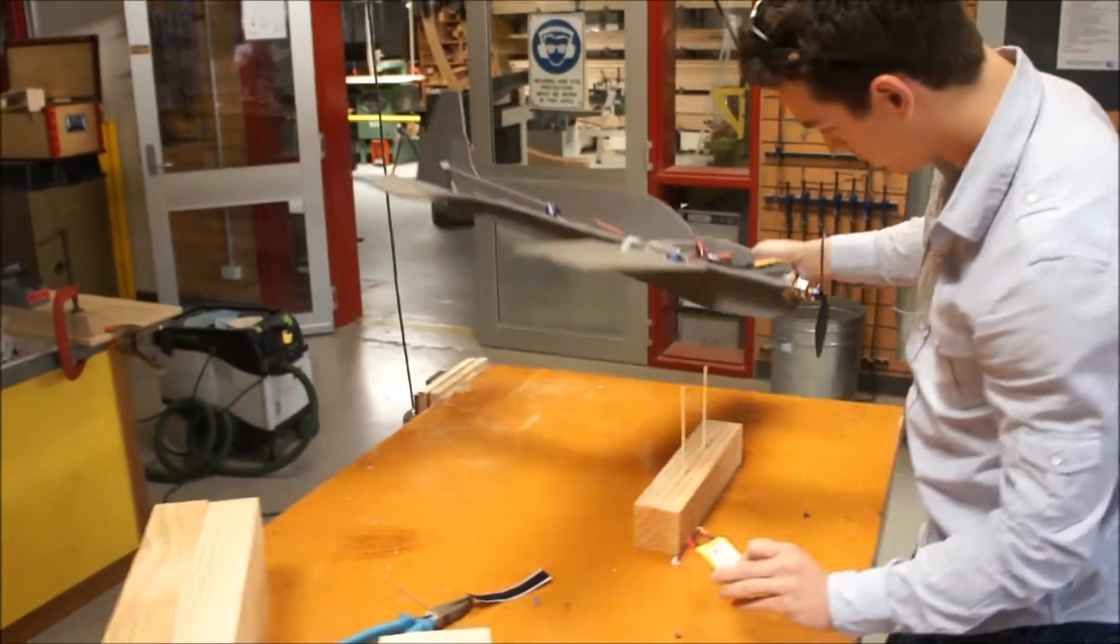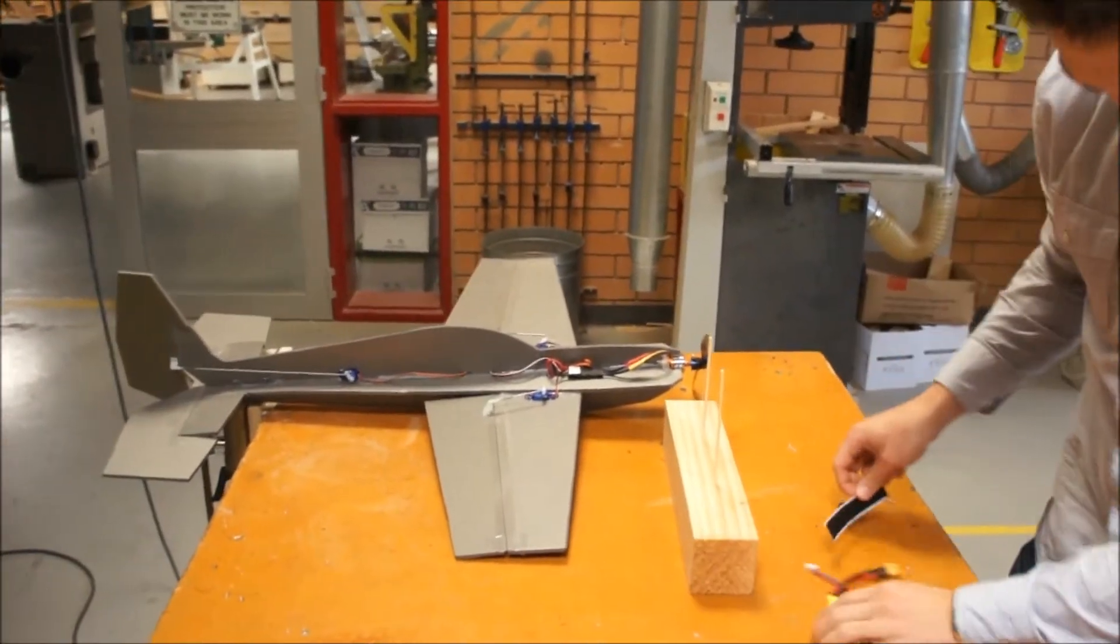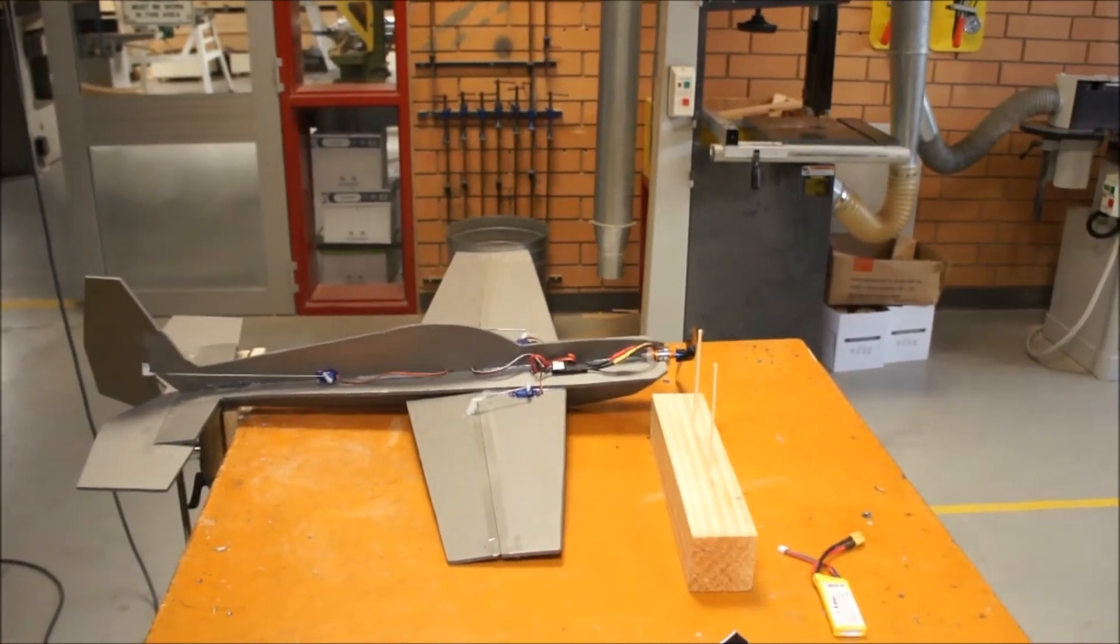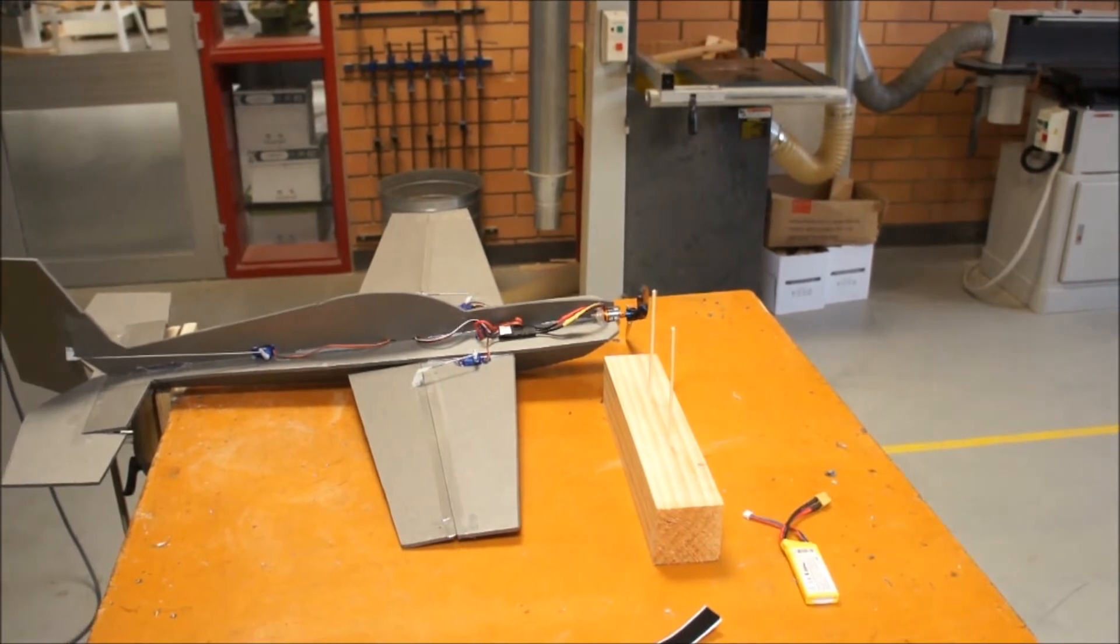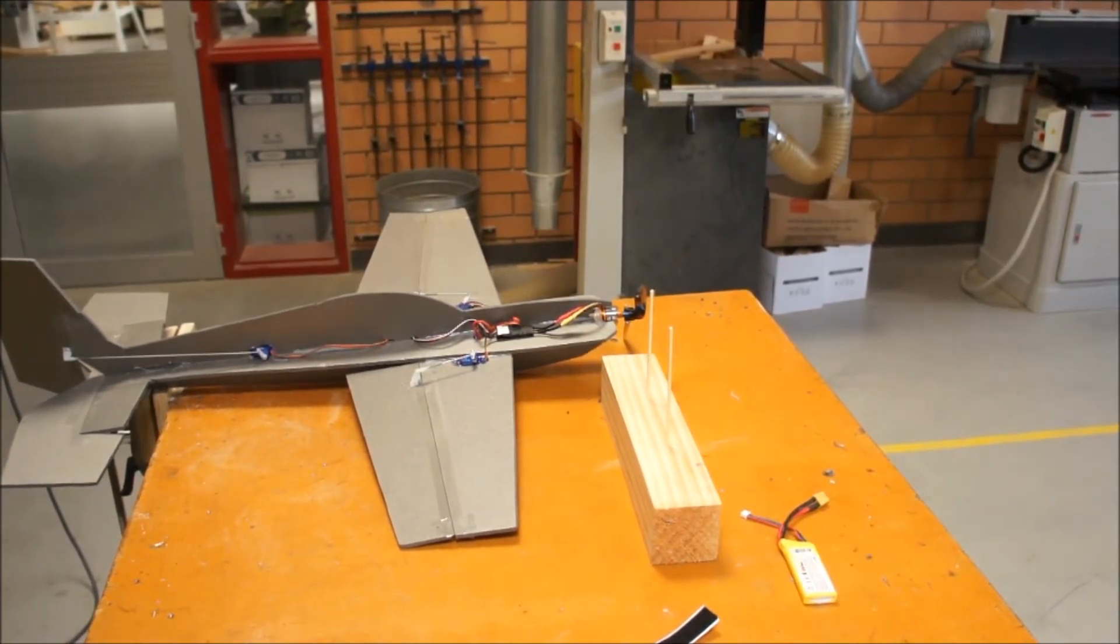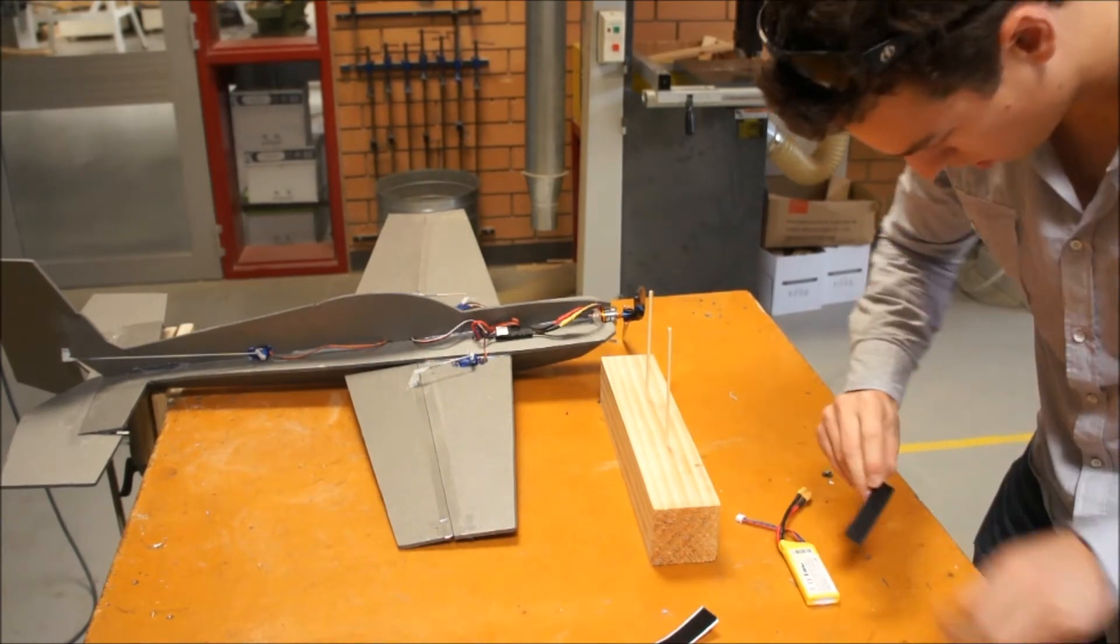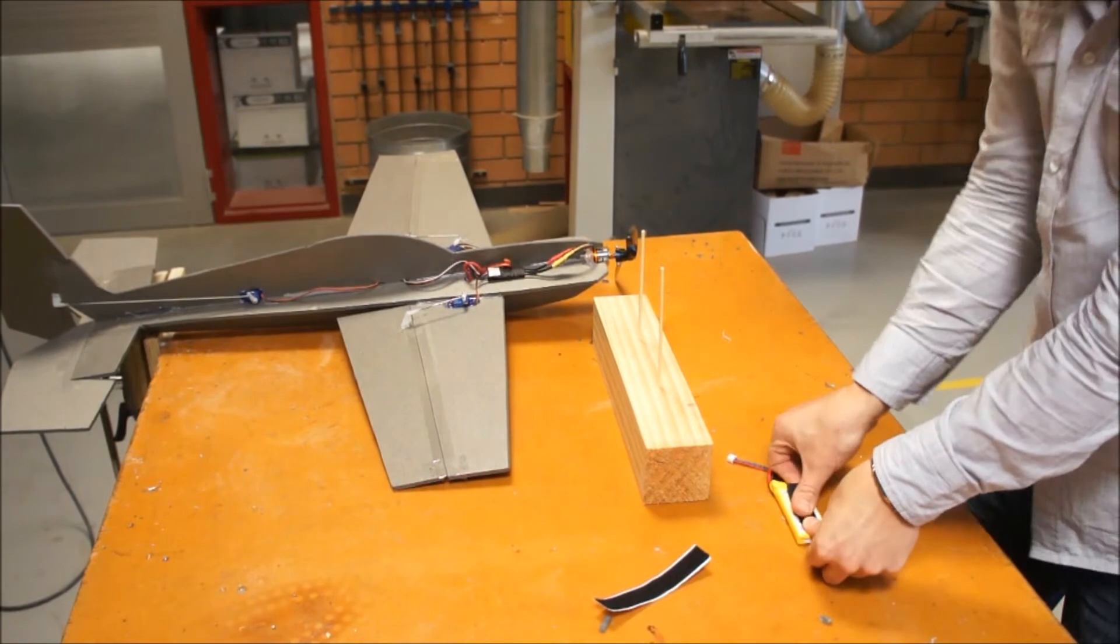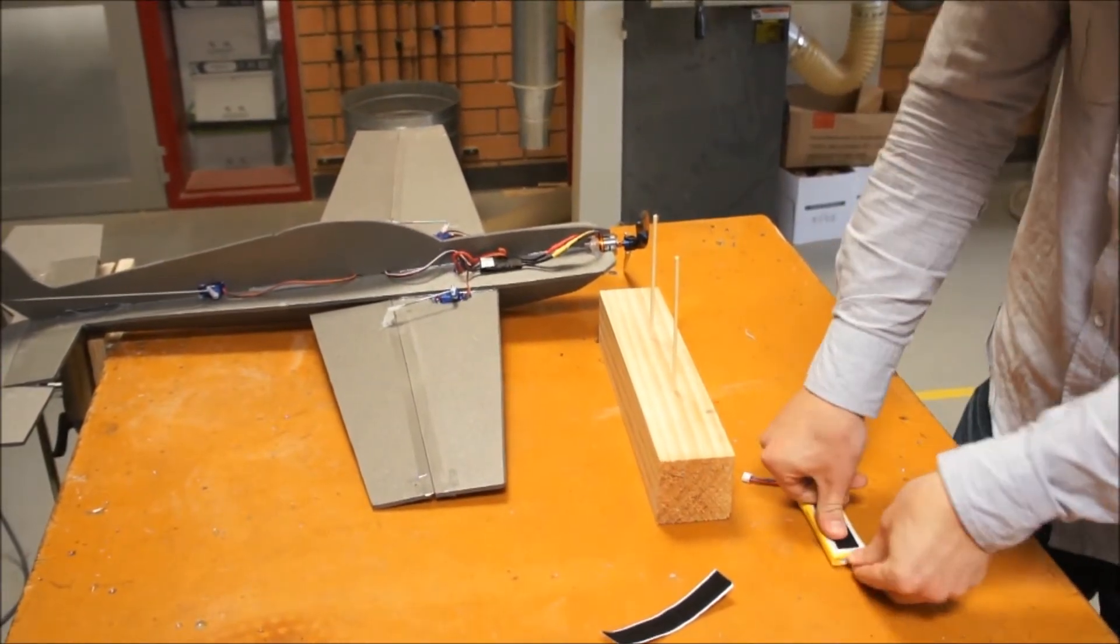So I've got a battery, this is just one of the two cells that I'm using and I'm going to use a bit of Velcro so that I can push it back and forth. Just cut a little strip. So one side of the Velcro on the back of the battery, making sure it's stuck on pretty well, you don't want it falling off mid-flight.